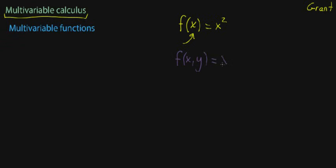Commonly, it'll output just a number. So you might imagine a number that depends on x and y in some way, like x squared plus y. But it could also output a vector, right? So you could also imagine something that's got multivariable input, f of x, y.